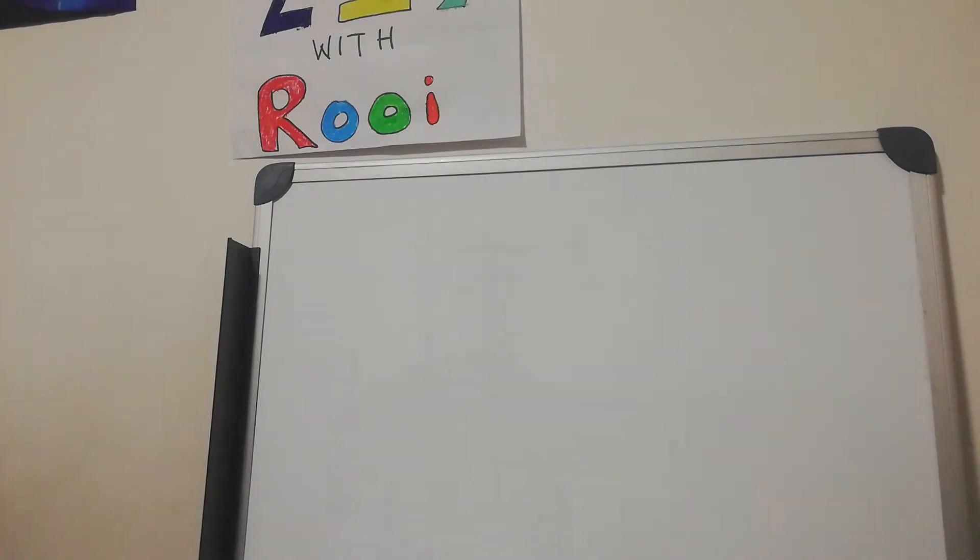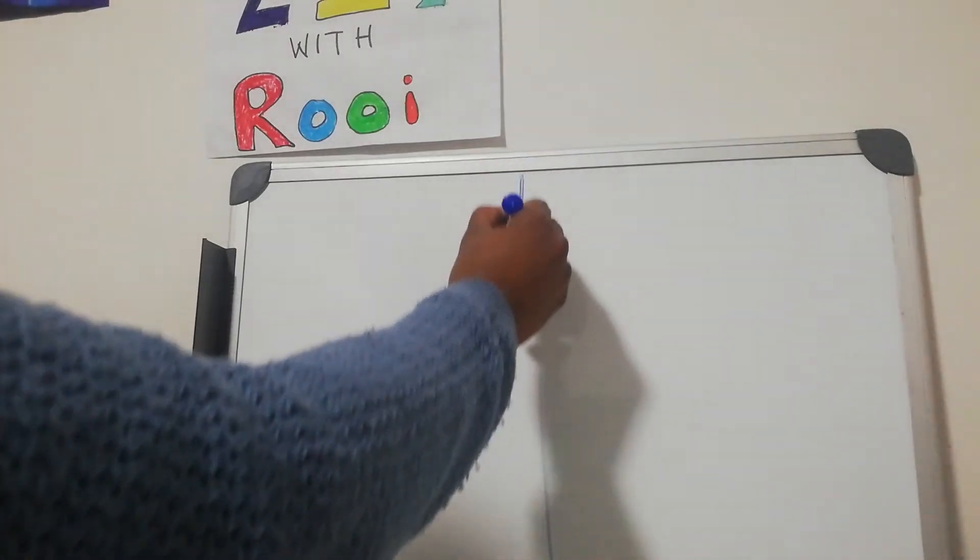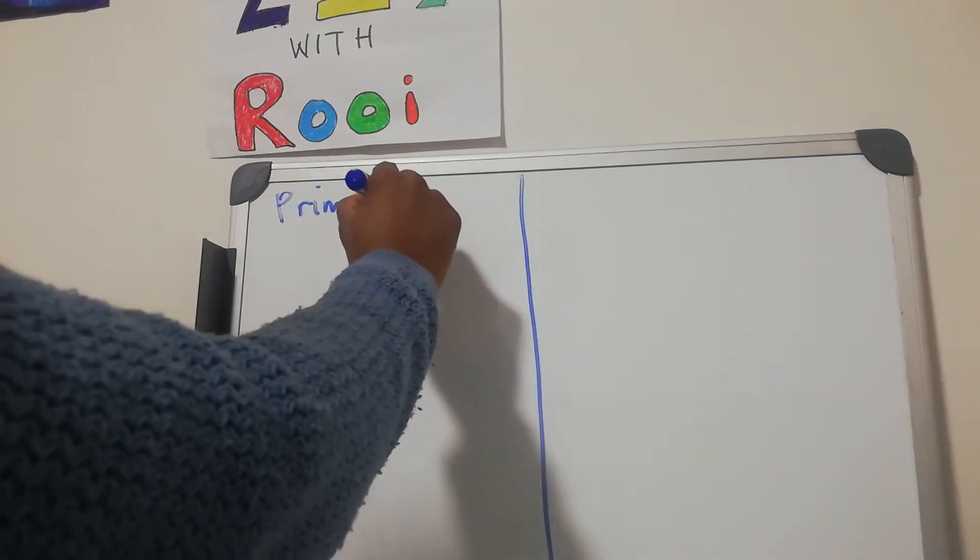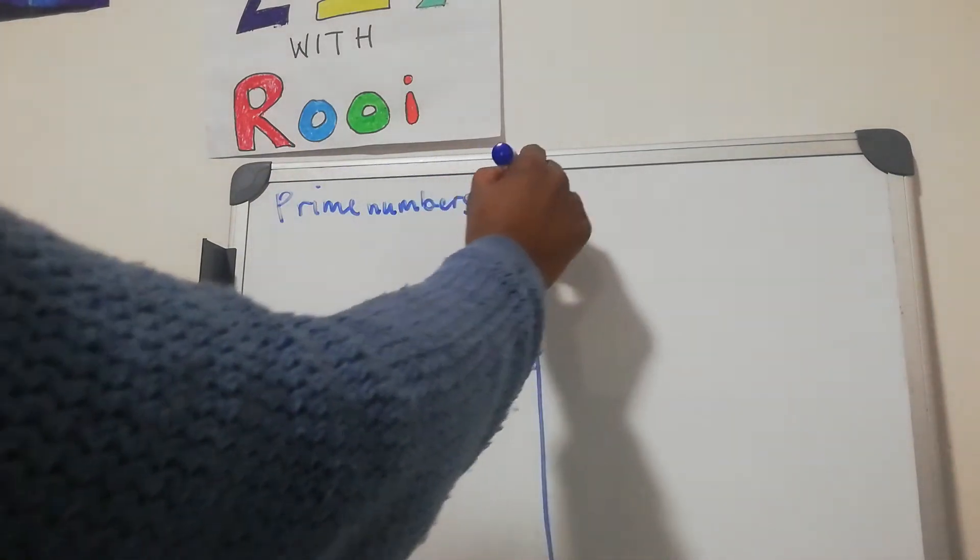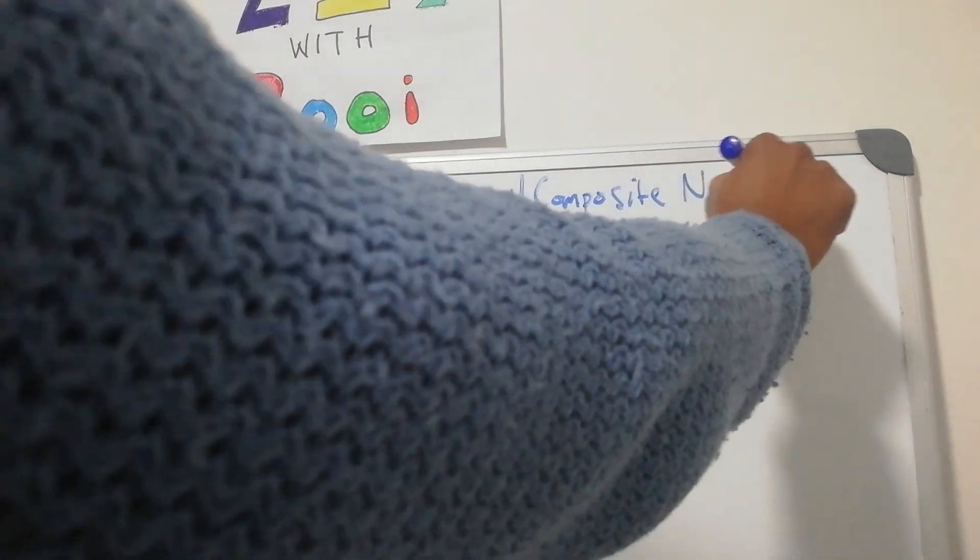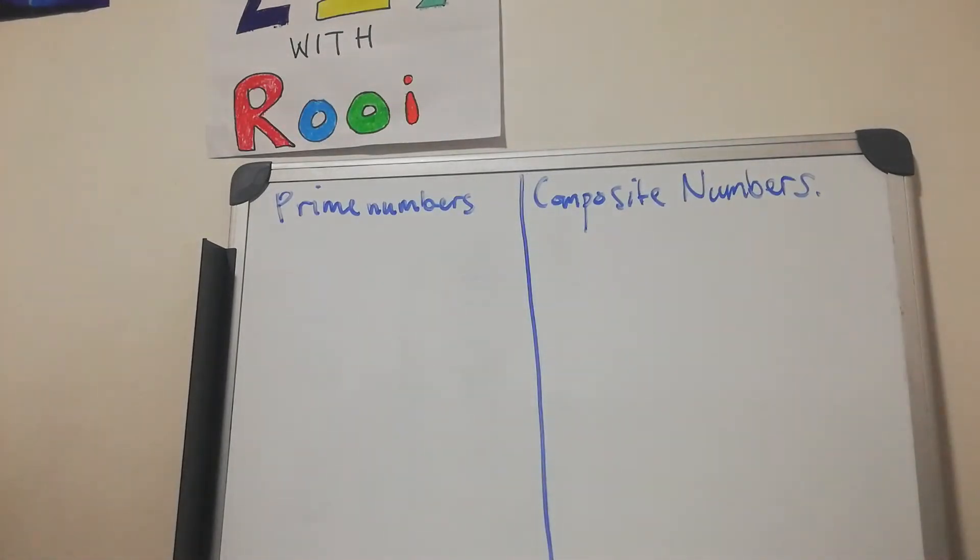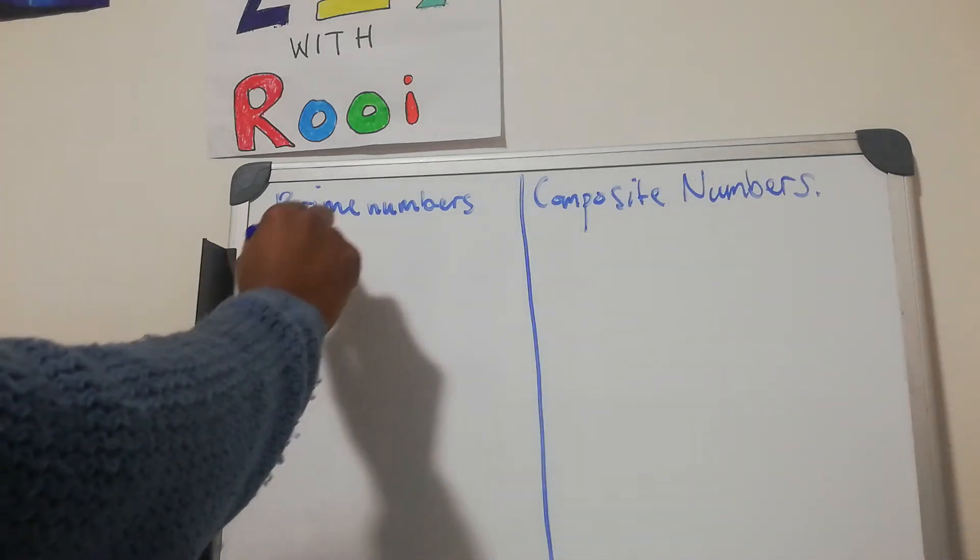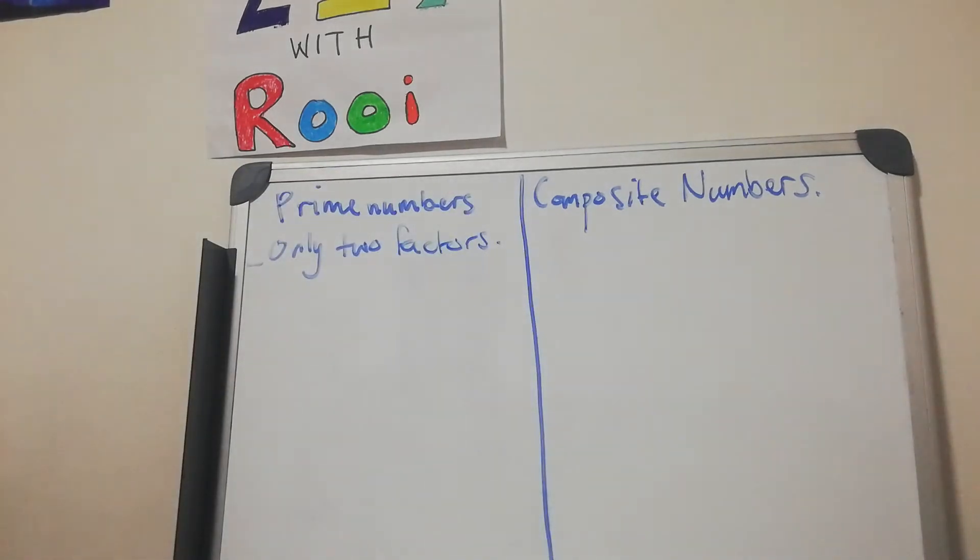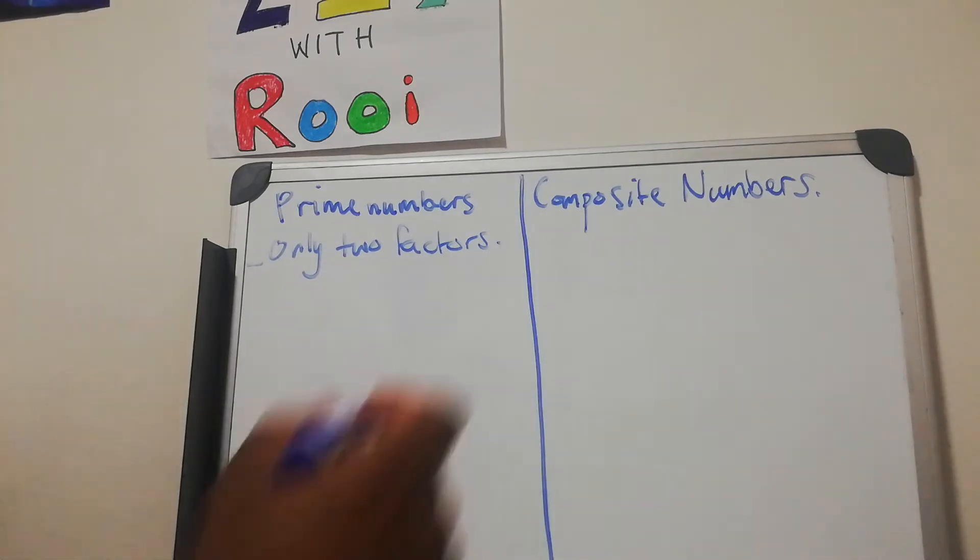Okay, so let's look at prime numbers and composite numbers. I'm just going to divide this into two. We have prime numbers and composite numbers. Now what is the difference between the two? Prime numbers are numbers that have only two factors.